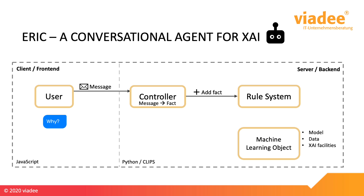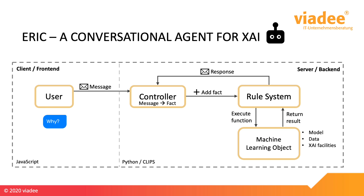This system action can be the execution of a Python function. The server backend also holds things like the machine learning model we try to explain, as well as training and test data, and also techniques for doing explainable AI. The rule system can use the results — for example some generated explanations — to create a message that it wants to send to the user. For this it contacts the controller, which is then responsible for transmitting the message to the user. This conversation can potentially go on forever, because the user can then reply on this message, and so on.